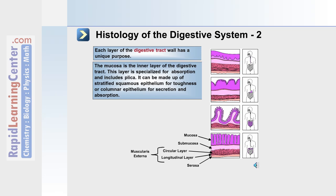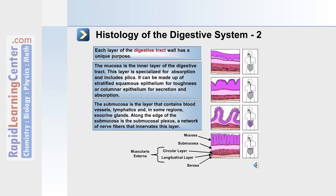The mucosa can be made up of squamous epithelium for toughness, or columnar epithelium for secretion and absorption. The submucosa is the next layer and it contains blood vessels, the lymphatics, and in some regions exocrine glands. Along the edge of the submucosa is the submucosal plexus, a network of nerve fibers that innervates this layer.